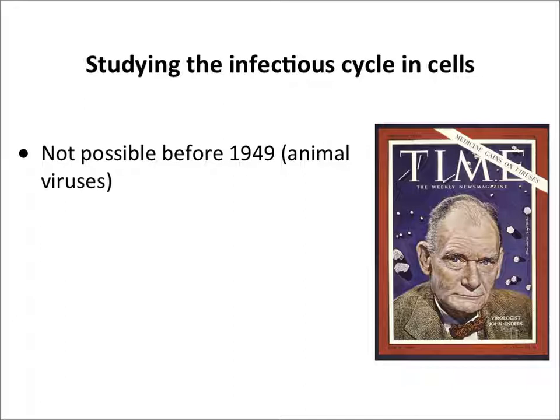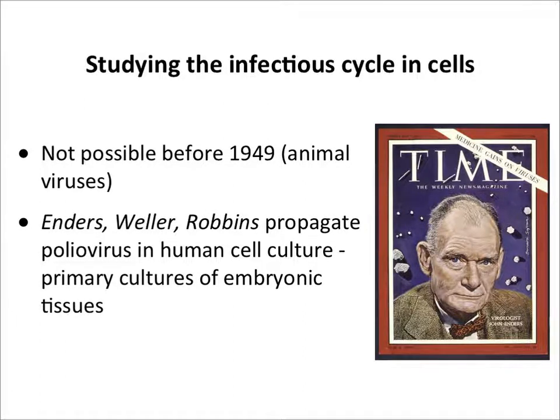Around 1949, John Enders, a professor at Harvard, figured out how to grow viruses in monolayers of cells in culture. He and two medical students showed for the first time that you could grow poliovirus in primary cultures of embryonic tissues — you can take embryonic tissues, mince them, make cell cultures, put them in dishes, and infect them with virus. This was a really big deal: all three got the Nobel Prize, and Enders insisted his students share it. He was on the cover of Time magazine in the 50s.